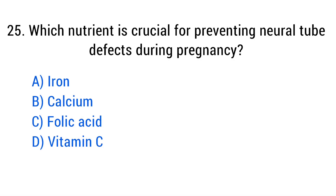Question number 25. Which nutrient is crucial for preventing neural tube defects during pregnancy? The right answer is option C: Folic acid.